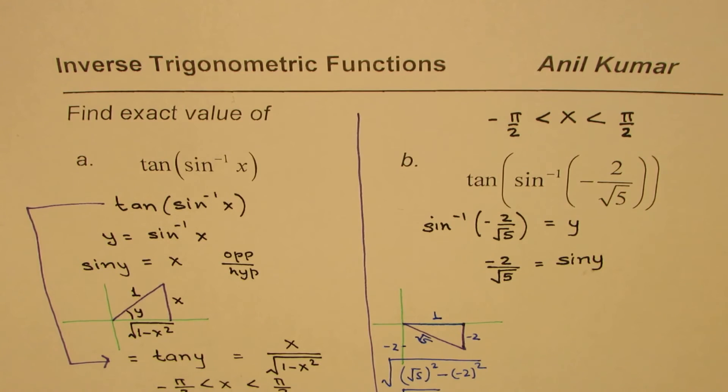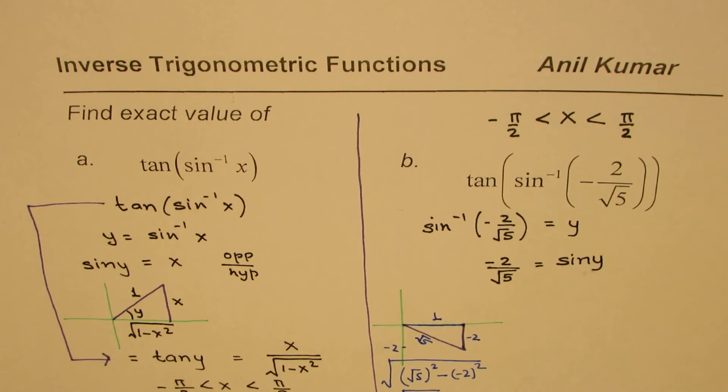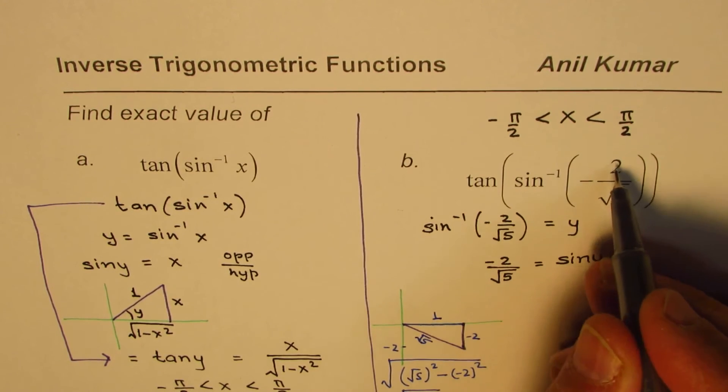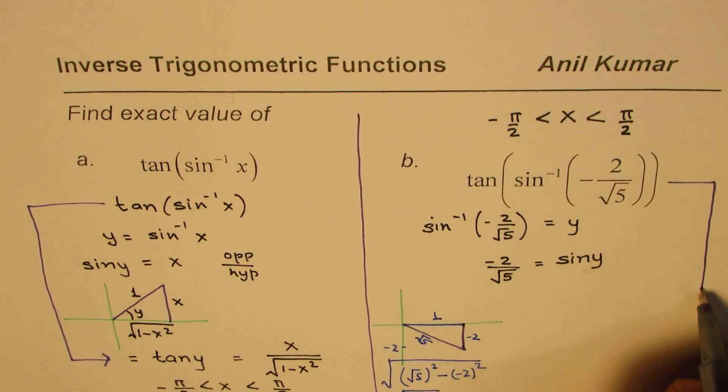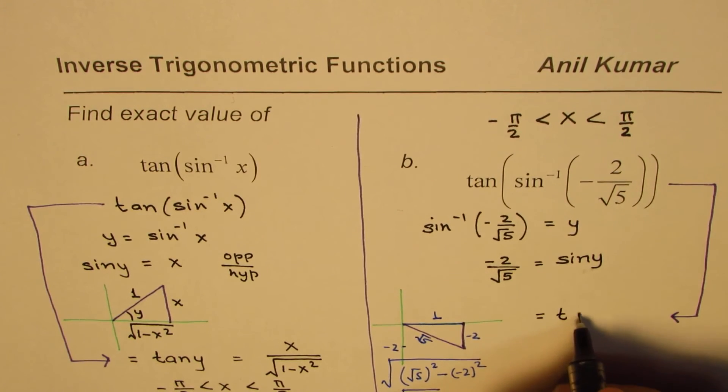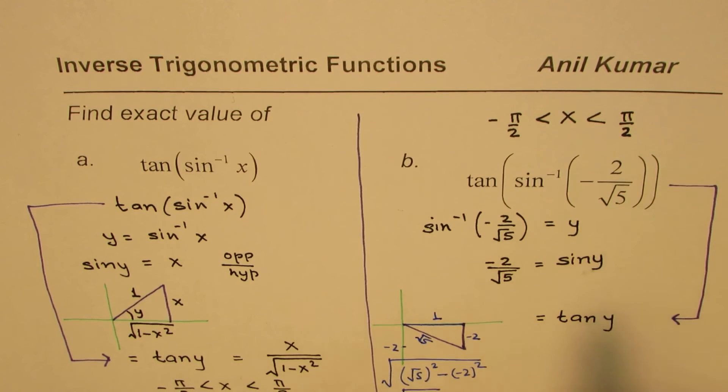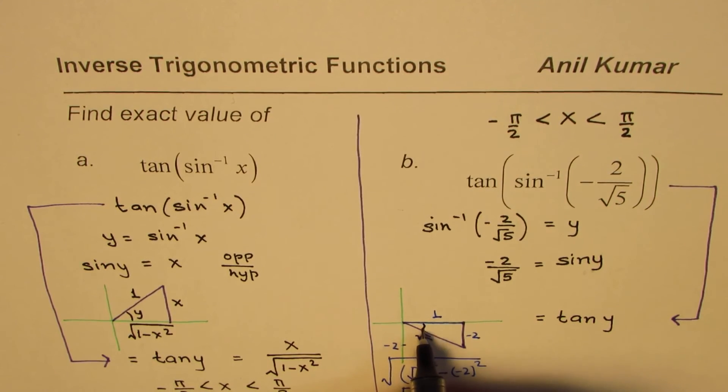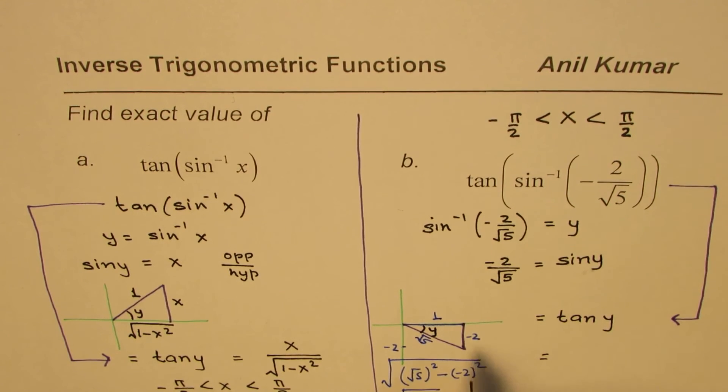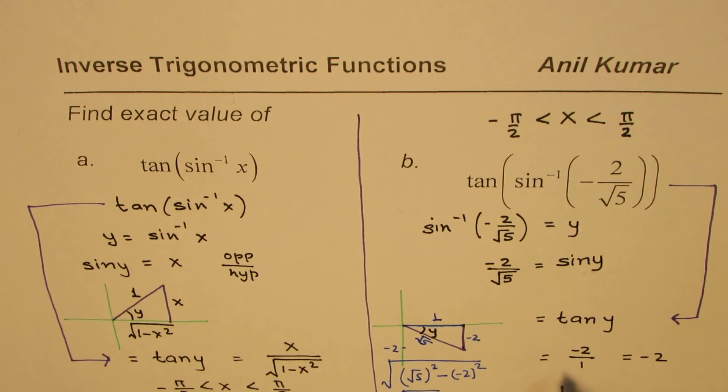So this is a triangle where the adjacent side is 1. Knowing this and with our substitution sine inverse of -2/√5 equals to y, we can write the given expression as equal to tan y where y equals sine inverse of -2 over square root 5. Now from this triangle this is the angle y for us. Tan will be equals to -2, opposite side over adjacent, so it is -2 over 1 or equals to -2.